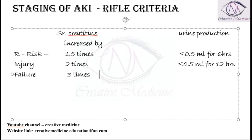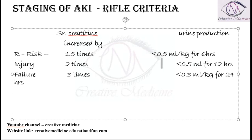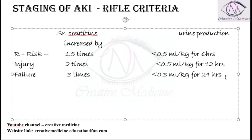F stands for Failure. In Failure, there is a three times increase in serum creatinine, and the urine production is less than 0.3 ml per kg for 24 hours. All of these urine thresholds are per kg — so for Risk it is 0.5 ml per kg, and for Failure it is 0.3 ml per kg for 24 hours.